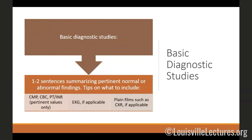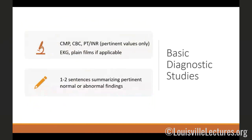Next, include the basic diagnostic studies in one to two sentences summarizing pertinent normal or abnormal findings. Include basics such as a comprehensive metabolic panel, complete blood count, or PT/INR — only what's pertinent. Include an EKG if it applies to your case, and plain films such as a chest radiograph. These will help characterize what your patient looked like when you first saw them and help frame what comes next. Then spend one to two sentences summarizing everything learned in these sections — for example, if the patient had acute renal failure with a certain urine output and the chest radiograph showed worsening bilateral infiltrates, this is where that belongs.